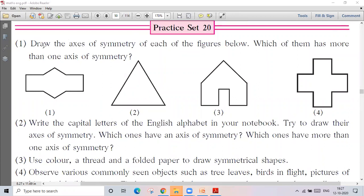Question number one: Draw the axis of symmetry of each of the following figures. Which of them has more than one axis of symmetry? So you can use your scale. First you can draw the axis of symmetry like this. Number one has one more axis of symmetry.